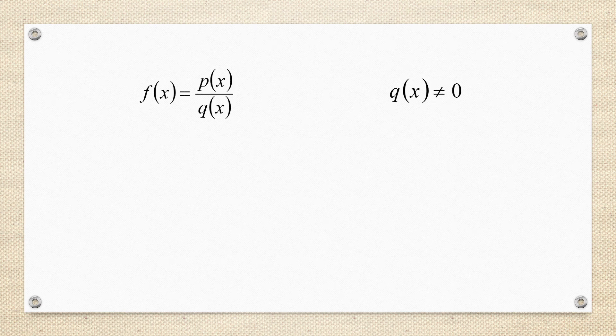If the function is in the form of p(x) by q(x), the function is defined only when the denominator is not equal to 0, that is q(x) is not equal to 0.